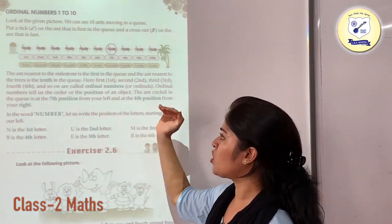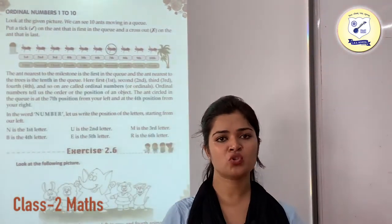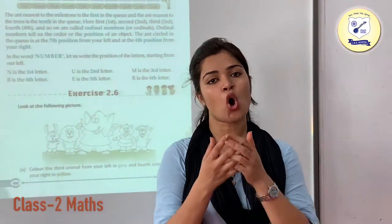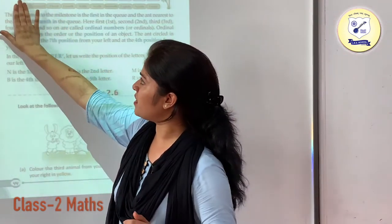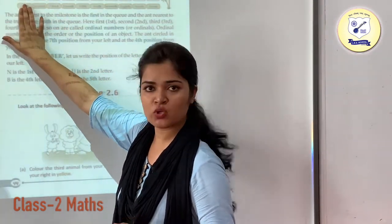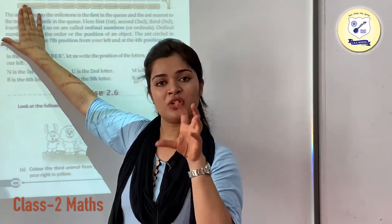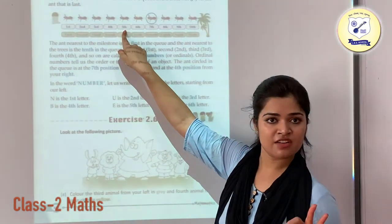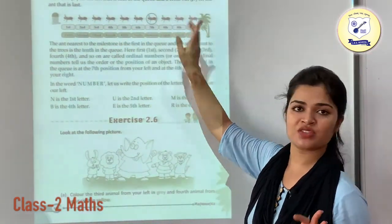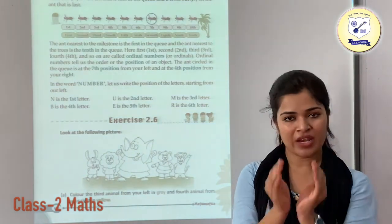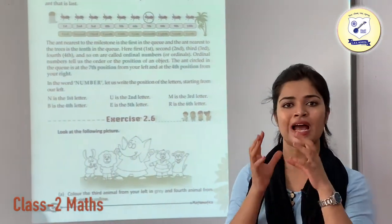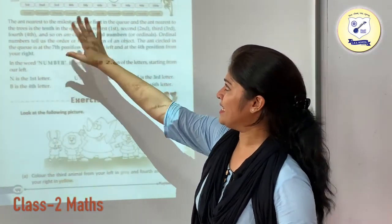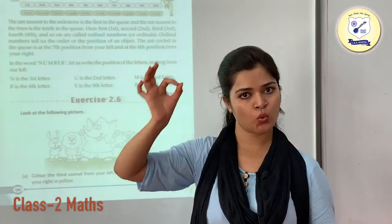Ordinal numbers tell us the order or the position of an object. If you want to talk about the position of something, we use the ordinal number. This ant is on first position, this is the second position. Similarly, this is the fifth position, this is the tenth position, and this one is your ninth position. Whenever you are talking about the position of an object, that is going to be your ordinal number. These are the positions from 1 to 10.